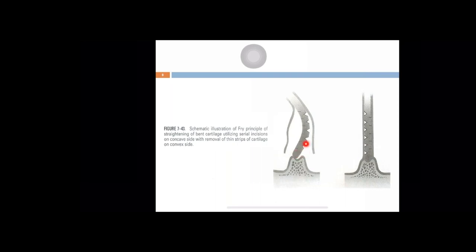Frey's principle: when the cartilage is carved — making horizontal incisions on the concave side of the cartilage in the septum and removing strips of cartilage on the convex side — then that warping will be gone, and the septum will be straightened because of loss of memory. This is important as far as the management of cartilaginous deviations is concerned, which I'll be talking about in the surgical part.